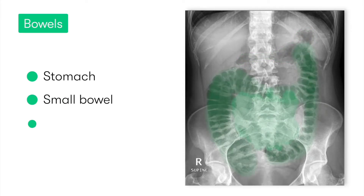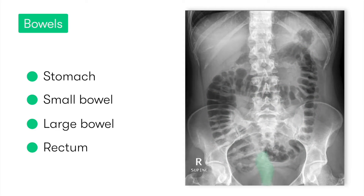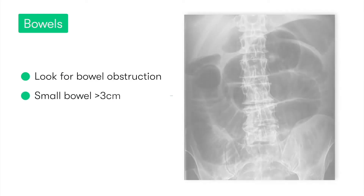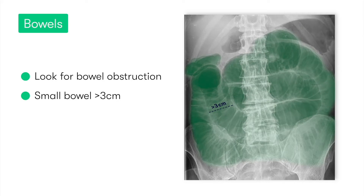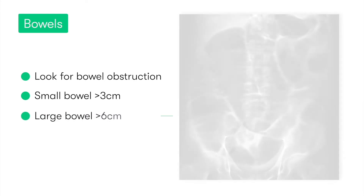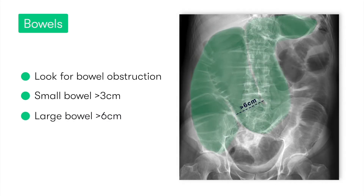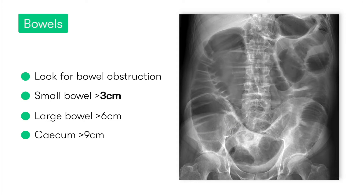Moving on to B for bowels, we can look at the stomach, the small and large bowel, and also the rectum. The main things we're looking for are evidence of bowel obstruction: for small bowel, this would be suggested by a bowel lumen greater than three centimeters in diameter; for large bowel, obstruction is indicated by a diameter greater than six centimeters; and for the cecum, which is naturally larger, it would need to be distended to a diameter greater than nine centimeters. We call this the three-six-nine rule.